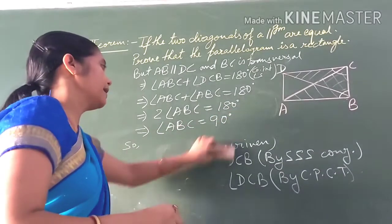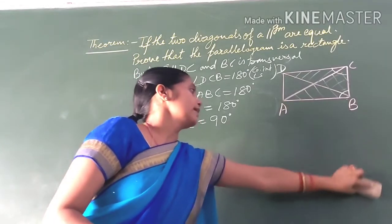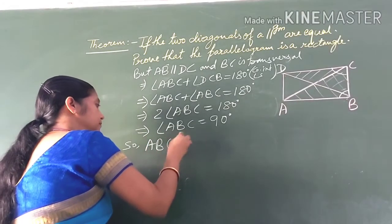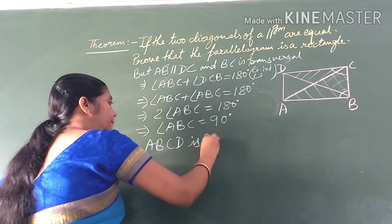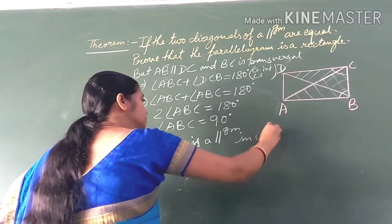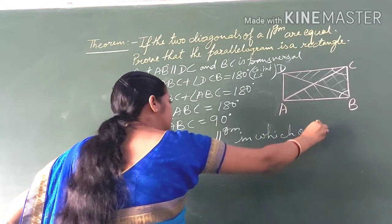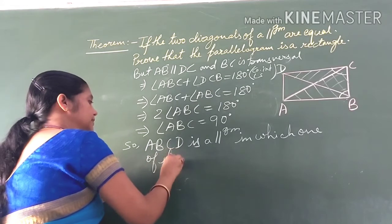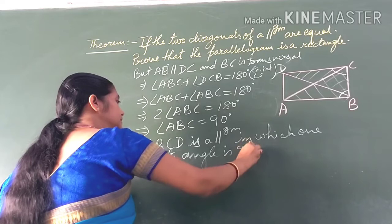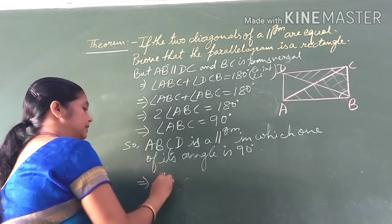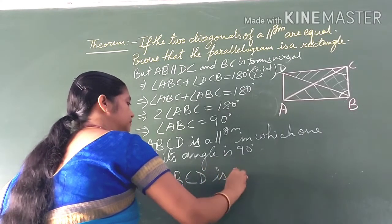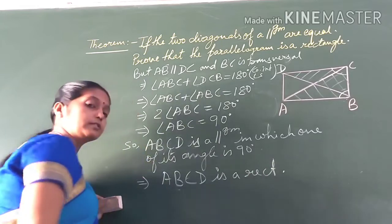So ABCD is a parallelogram with one angle equal to 90 degrees. A parallelogram in which one of its angles is 90 degrees is a rectangle. Hence, ABCD is a rectangle. This completes the proof.